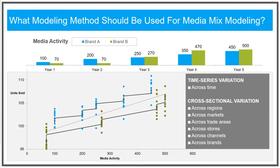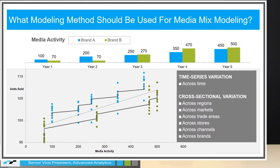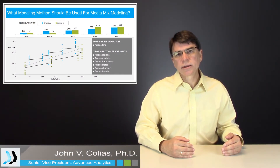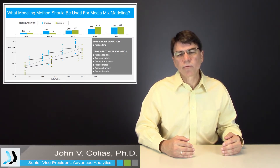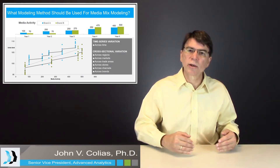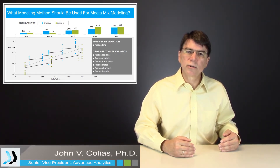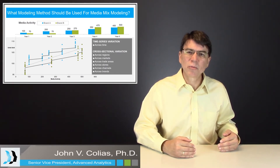If we were trying to model this data with this sea of points, and we fit a line to the data, we'd get the dashed line. If we didn't take into account the variation across brands — the differences of the two brands — then we would get this dashed line, which has a slightly steeper slope than each of the individual brand lines. This means that if we use a modeling method that doesn't decompose the variation across brands from the variation across time, we would get a bias in the measure of the impact of media activity on unit sales, as represented by that slightly steeper slope.